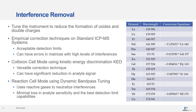For interference removal, first we need to tune the instrument to reduce double charges and oxide formation. There are three main ways to remove the interferences using the instrument. Firstly, standard mode — in this mode to remove interferences we have to use correction equations. A lot of the time we get acceptable detection limits with standard mode operation, but there can be errors if the matrices are high or we have high levels of interferences.